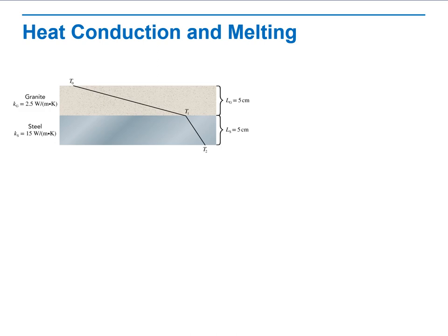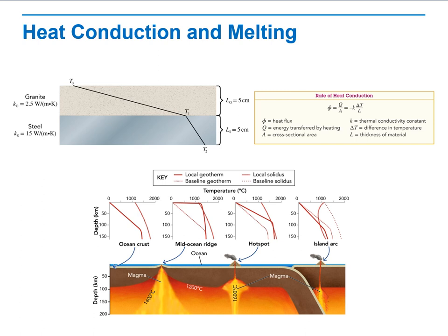We will talk about heat conduction and melting. We will study the rate of heat conduction. Thermal energy travels better through steel than through granite. How can you use the graph to understand where melting of rock will occur?